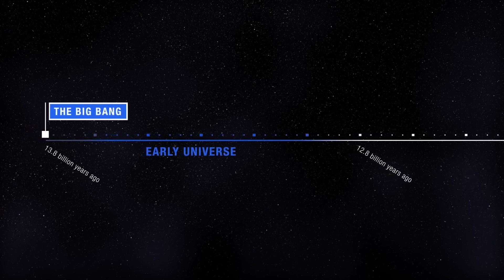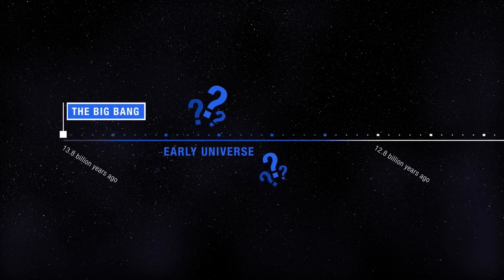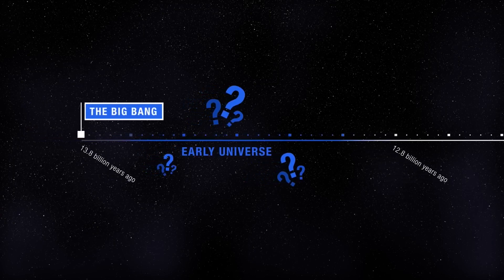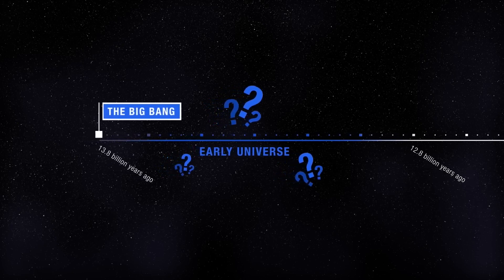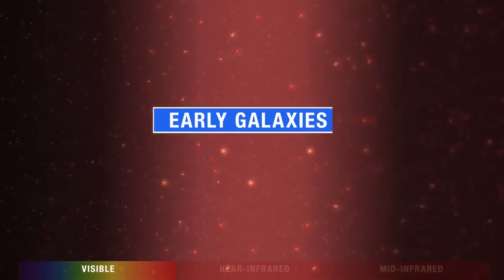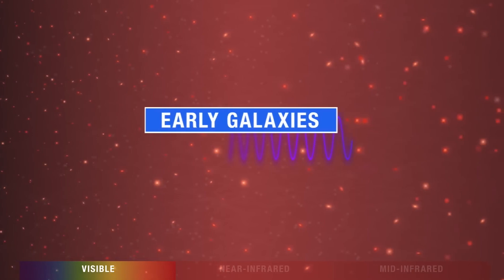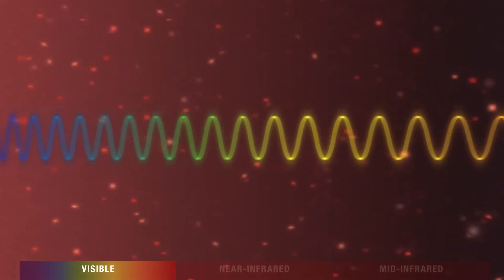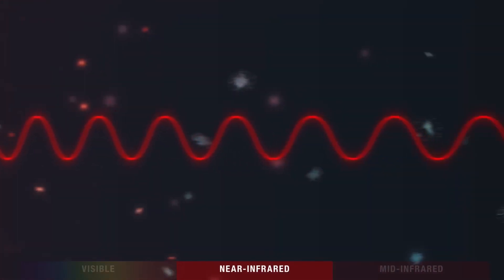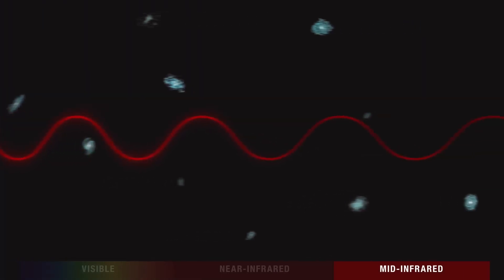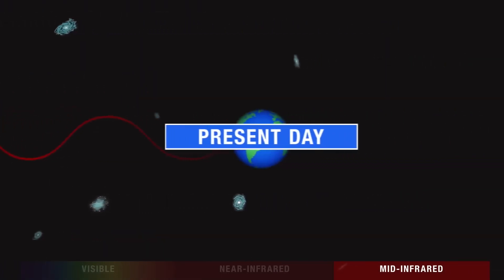Detecting light from the first galaxies to form has been a challenge for even the most powerful telescopes. As the light early galaxies emitted traveled through space, that space itself was expanding, stretching the light to longer, infrared wavelengths.